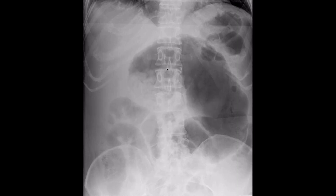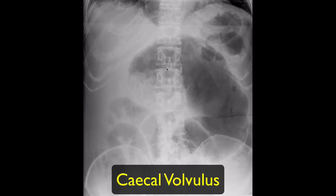This is suggestive of a caecal volvulus, with this gas-filled loop of large bowel being the twisted and rotated cecum, which has become displaced from the right iliac fossa.